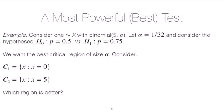So suppose we have one random variable X with a binomial distribution 5P. You can also think about this example as having five Bernoullis. And suppose that our alpha, so our size or probability of type 1 error,